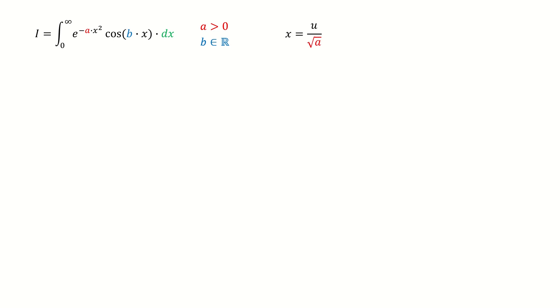So first, we do the substitution. We let x equals to u over square root a. And then we can find a times x square equals to u square.